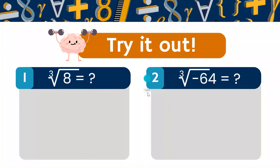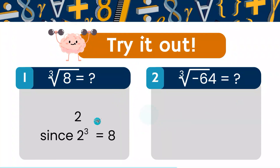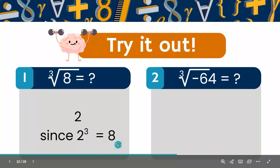Let's try these out. I have two problems for you to figure out — pause the video and try solving them without looking at the chart. First: the cube root of 8. What number cubed equals 8? The answer is 2, since 2 cubed is 8. 2 times 2 is 4, and then 4 times 2 is 8.